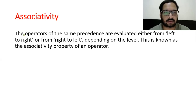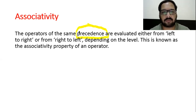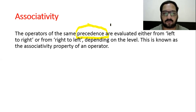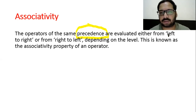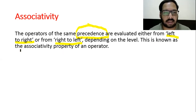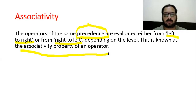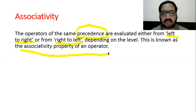Next comes associativity. The operators of the same precedence — precedence means priority of operator, or order of evaluation of operators. Sometimes in an expression, two operators have the same precedence, so we evaluate them either left-to-right or right-to-left depending on the level. This is known as the associativity property of an operator. To see the associativity and precedence of each operator, you can search for the precedence table of C online.